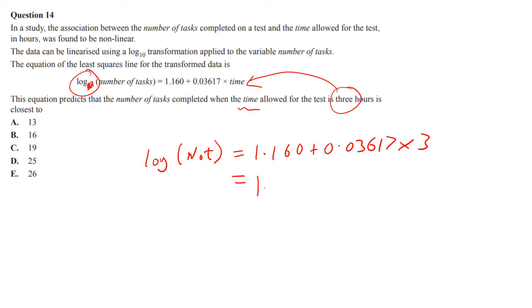You get 1.26851. Remember that's log of the number of tasks, not the answer itself. So you've got to inverse log it. All you've got to do is say the number of tasks equals 10 to the power 1.26851.